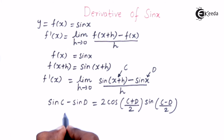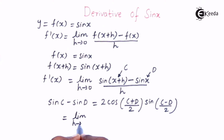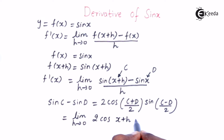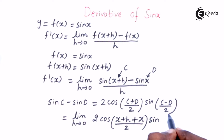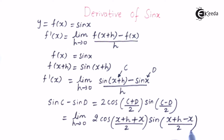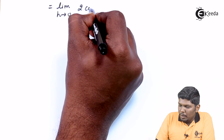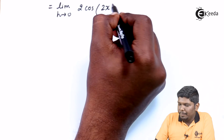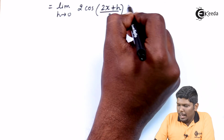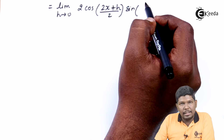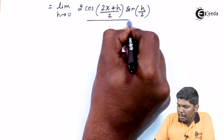The next step will be: limit h tending to 0, 2 cos of C plus D — that is X plus H plus X — upon 2, into sine of C minus D — that is X plus H minus X — upon 2, the whole divided by H. This simplifies to: limit h tending to 0, 2 cos of 2x plus H upon 2, into sine of H upon 2, divided by H.